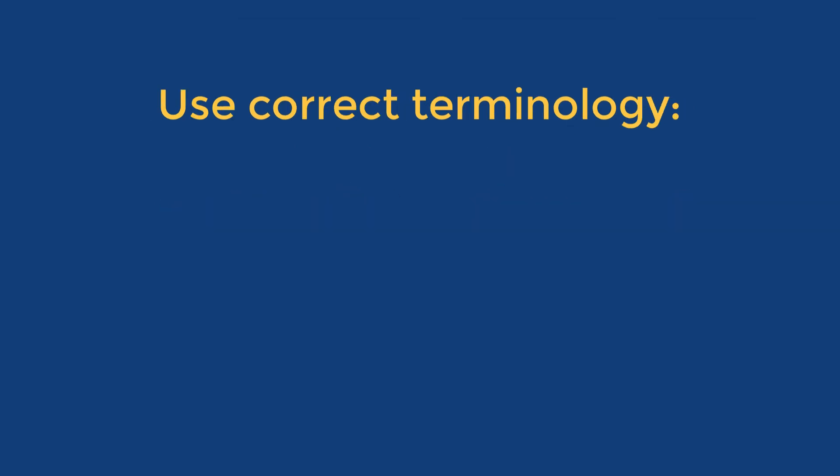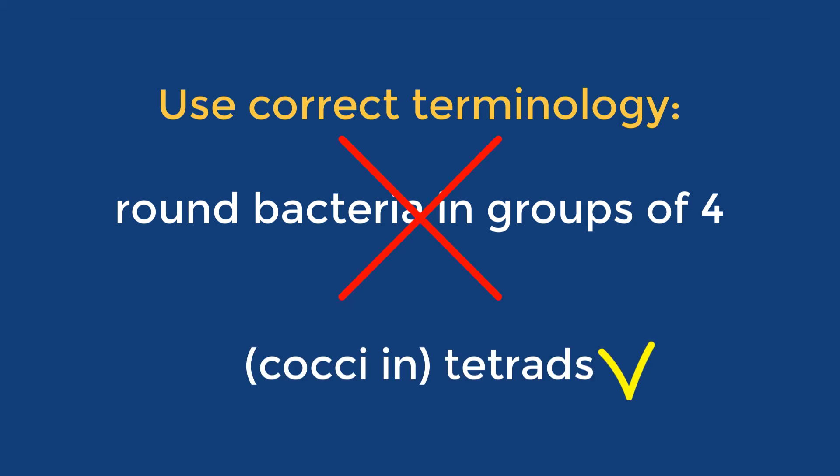You should always use the correct terminology to describe bacterial morphology. For example, you will not earn credit for round bacteria in groups of four. The correct phrasing is cocci in tetrads, or just tetrads.